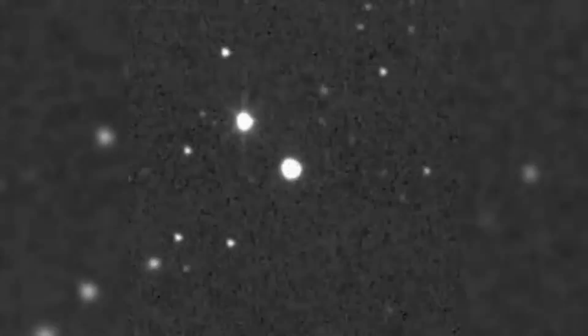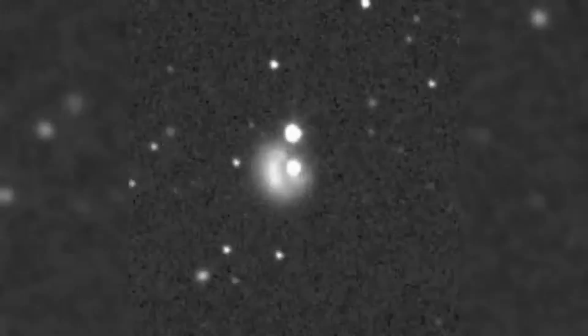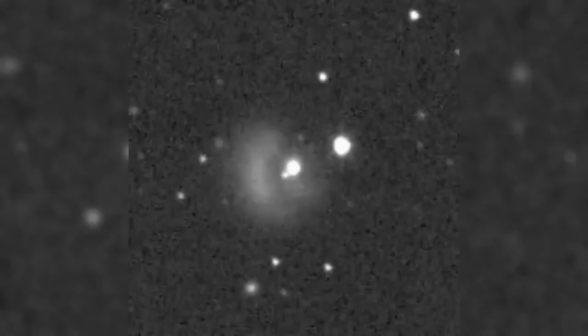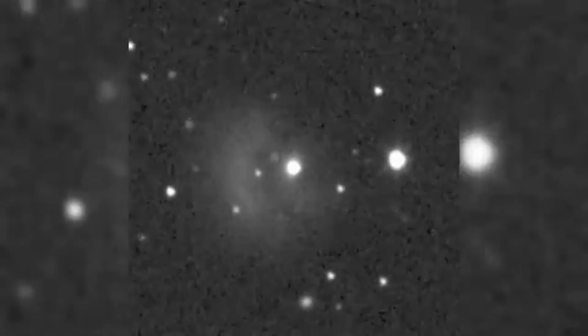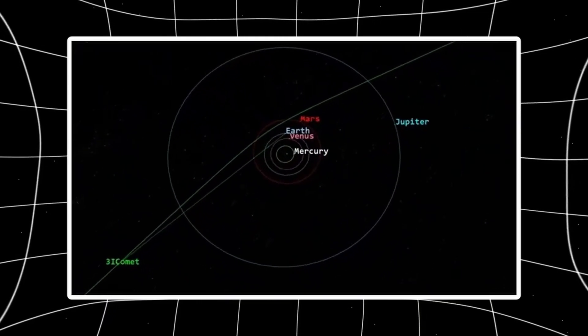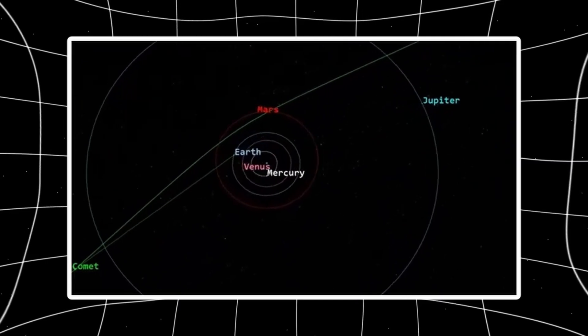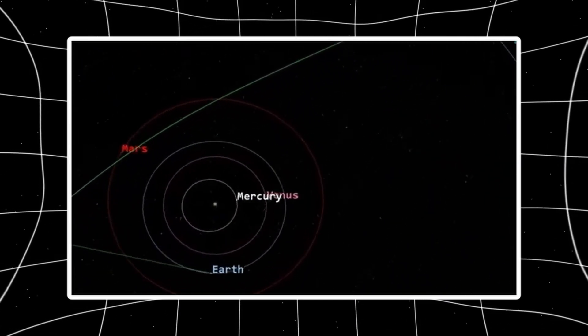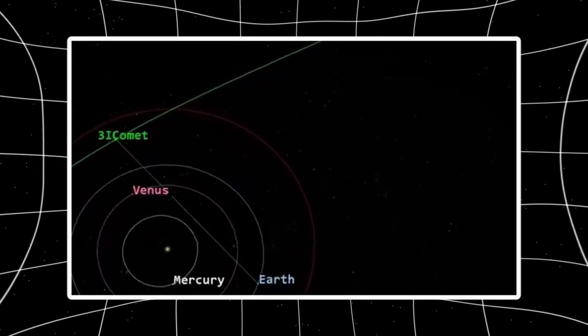Then they applied the Larson-Secanina filter. This tool removes smooth backgrounds and exposes fine structure. And there it is. A strong, collimated feature extending outward from the nucleus. Tens of thousands of kilometers. Pointing sunward. Holding its shape across every wavelength.